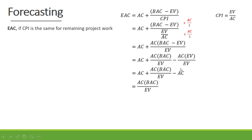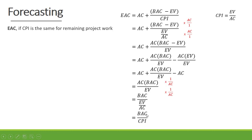Now the plus actual cost and minus actual cost cancel out, leaving us with actual cost times budget at completion divided by earned value. If we multiply above and below the line by one over actual cost, the actual cost cancels out at the top. So we get budget at completion divided by earned value over actual cost. Since earned value divided by actual cost is our cost performance index, we replace it with CPI, giving us budget at completion divided by CPI.